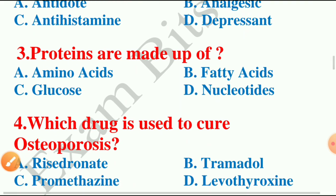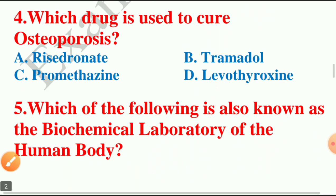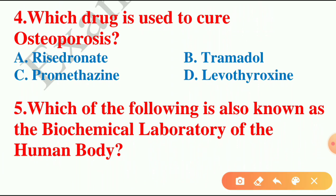Moving on to question number four: which drug is used to cure osteoporosis? The answer for this question is option A — risedronate. Osteoporosis is a bone disease, a condition in which the bones become thinner and weaker and can be broken easily. Risedronate is the drug used to prevent and treat osteoporosis.